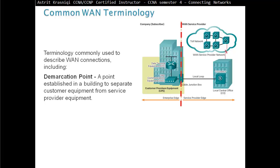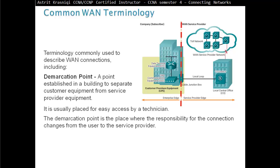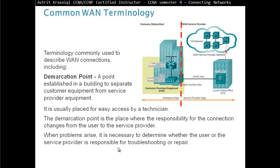Demarcation Point, a point established in a building to separate customer equipment from service provider equipment. It is usually placed for easy access by a technician. The demarcation point is the place where the responsibility for the connection changes from the user to the service provider. So up to here, for example, anything that happens, a problem in this site is the service provider's responsibility to correct it. If any problem happens in this site, then it's our responsibility. So the demarcation point is a point where we separate the responsibilities, who has responsibility for what area. When problems arise, it is necessary to determine whether the user or the service provider is responsible for troubleshooting or repair.